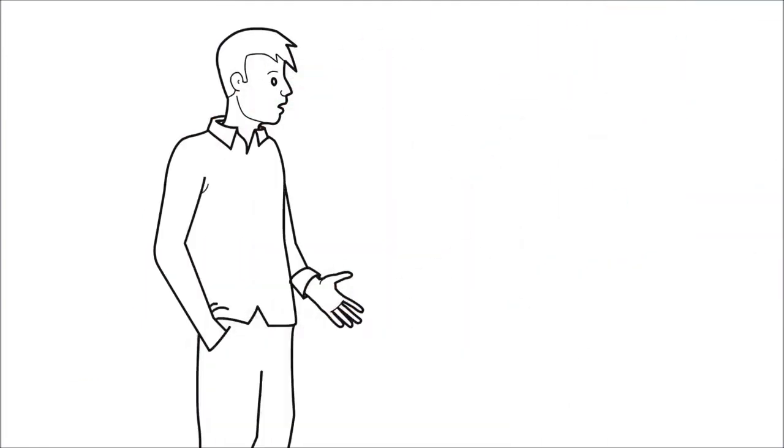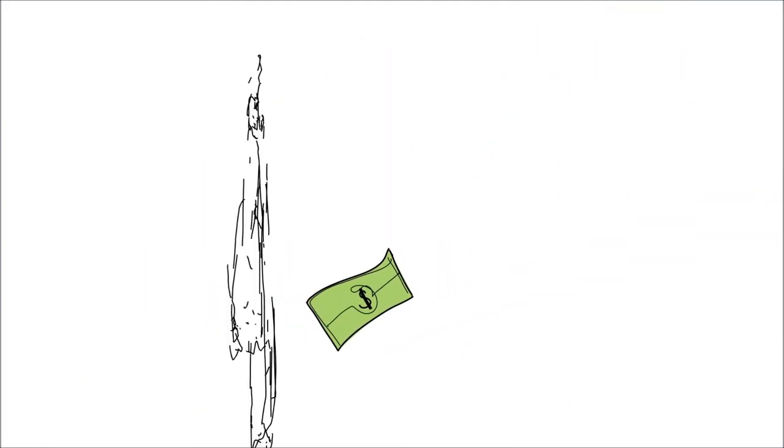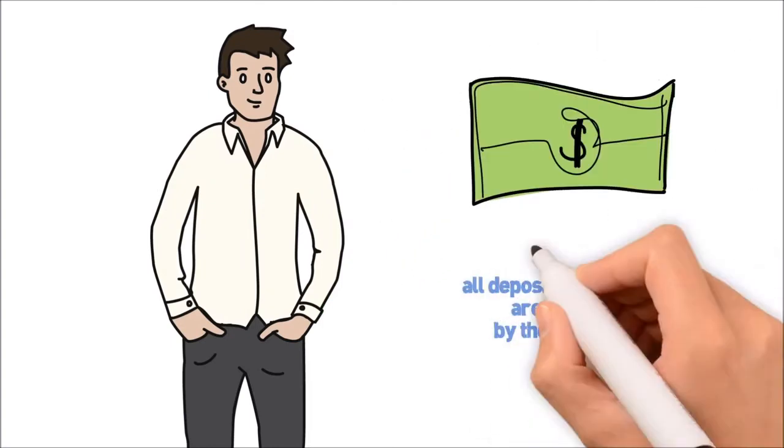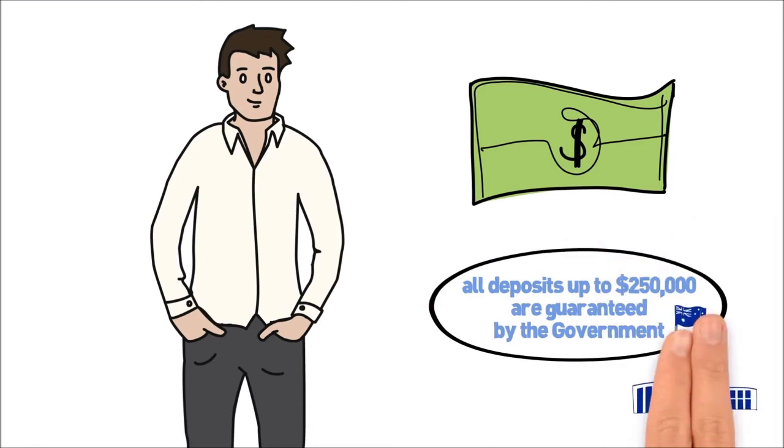When the deposit matures, you can get your money back or roll it over into another term deposit. The main benefit of a term deposit is that all deposits up to $250,000 are guaranteed by the government.